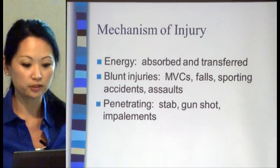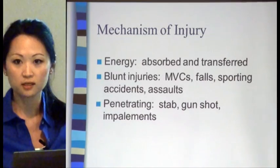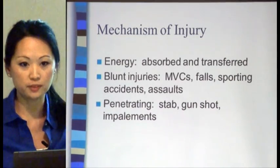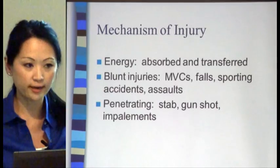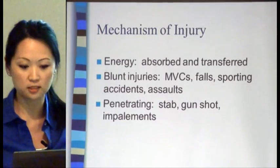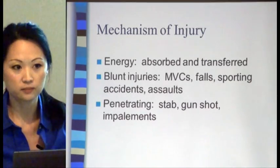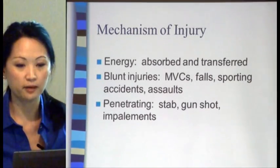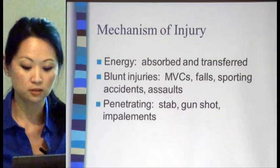There are two types of injuries: blunt and penetrating. Blunt injuries are typically your car accidents, falls, sporting accidents, and assaults. Penetrating injuries would be impalements, whether by stabbing or gunshot wounds.